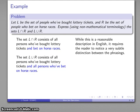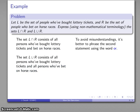To exaggerate the difference between the two, to make it easier to distinguish the non-mathematical description of L intersect R and the non-mathematical description of L union R, we prefer to describe the situation using the phrase OR. So we might change our second description. This is the set that consists of all persons who've bought lottery tickets or who've bet on horse races. And so this gives us a nice distinction between the AND and the OR.